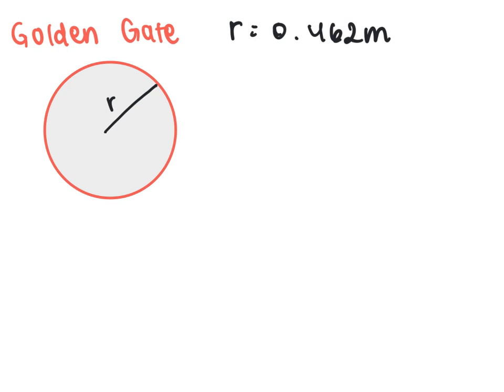So let's do some practice by finding the area moment of inertia of the Golden Gate Bridge. The radius of the Golden Gate Bridge is 0.462 meters, which is pretty big if you think about it. That means the entire diameter of the Golden Gate Bridge is about a meter stick. So let's write down our equation for a circular moment area of inertia, which is I equals pi r to the fourth all over 4.